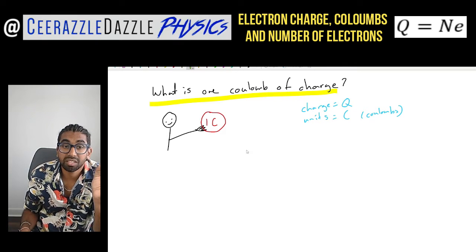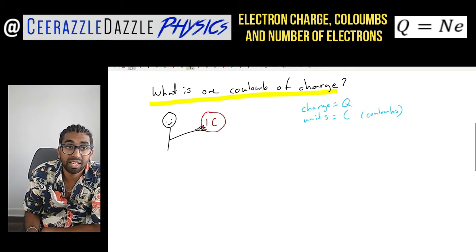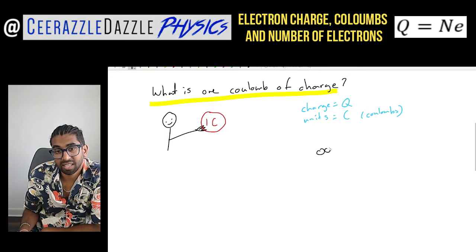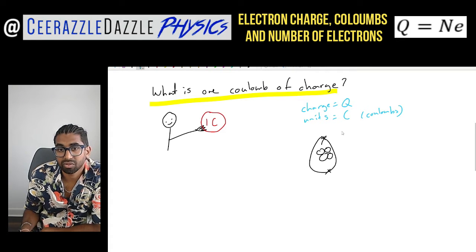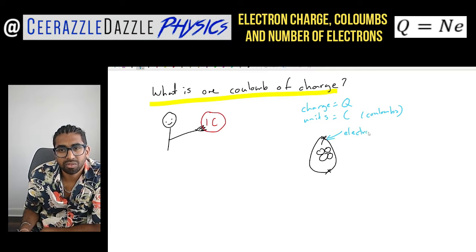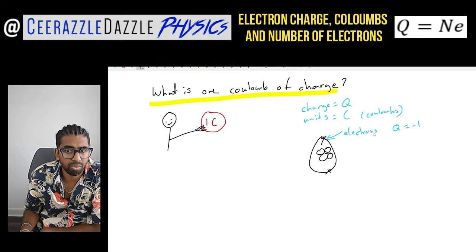To explain this we're going to talk about electrons. Here's my atom, and we know that electrons orbit the atom. Lower down the school you learn that electrons have a charge of minus one.